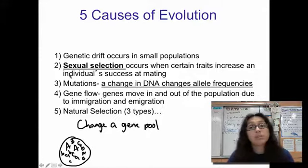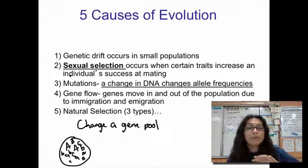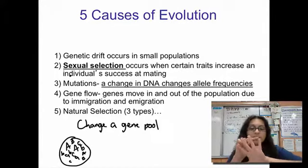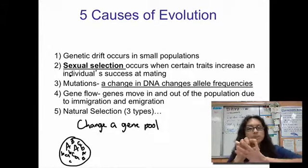So going back to Paul Anderson's video, you can actually use your hand to remember the five causes of evolution. So if you look at your hand, the little finger here is small. That represents genetic drift. So genetic drift has a major impact on small populations. So your tiny little pinky here represents genetic drift.